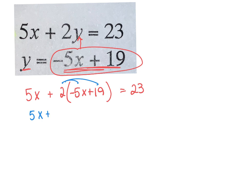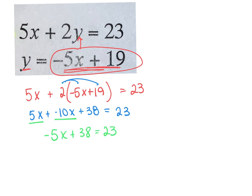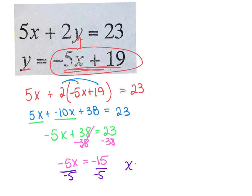2 times negative 5x is negative 10x. 2 times 19 is positive 38, equals 23. Combine my like terms: 5 and negative 10 give me negative 5x. Then subtract your 38 over. That's going to give me a negative 15. Then divide by my 5. Negative 15 divided by negative 5 gives x equals 3.